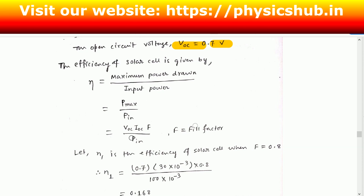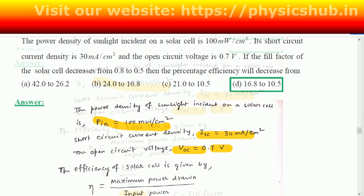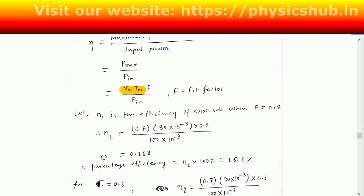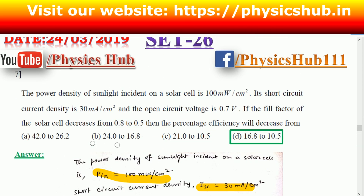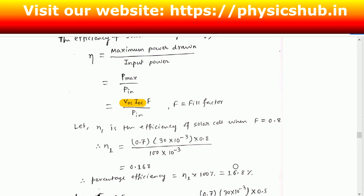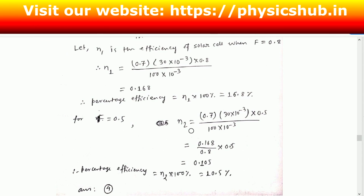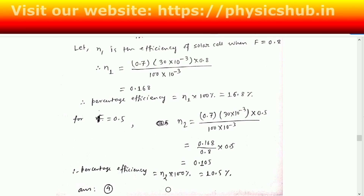The efficiency eta equals maximum power divided by input power, P_max by P_in. P_max involves the fill factor, Voc, and Isc. When the fill factor is 0.8, eta equals 0.168, so percentage efficiency is 16.8 percent. When the fill factor becomes 0.5, replacing 0.8 with 0.5 gives eta equal to 0.105, meaning percentage efficiency becomes 10.5 percent. So efficiency drops from 16.8 percent to 10.5 percent, matching option D.